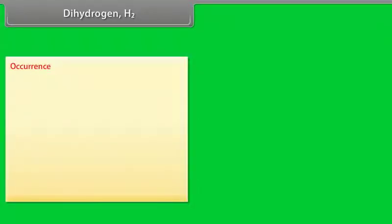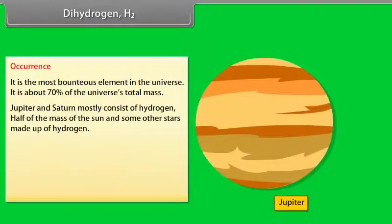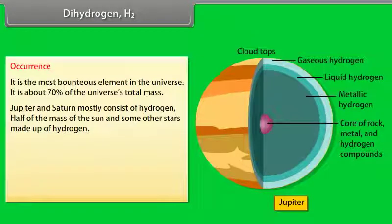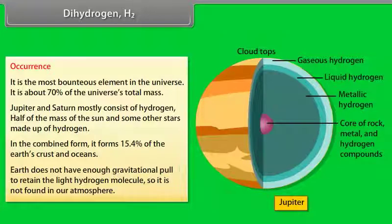Dihydrogen H2 Occurrence. Dihydrogen is the most spontaneous element in the universe. It has about 70% of the universe's total mass. Jupiter and Saturn mostly consist of hydrogen. Half of the mass of the Sun and some other stars made up of hydrogen. In the combined form, it forms 15.4% of the Earth's crust and oceans. Earth does not have enough gravitational pull to retain the light hydrogen molecule, so it is not found in our atmosphere.